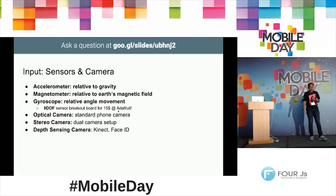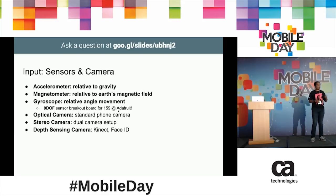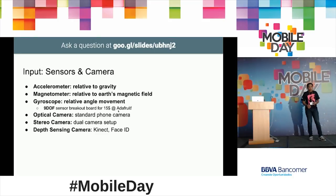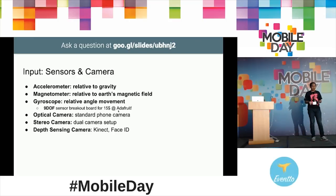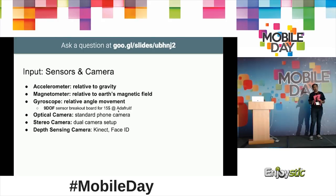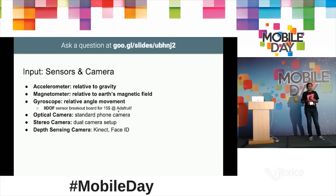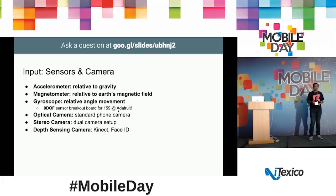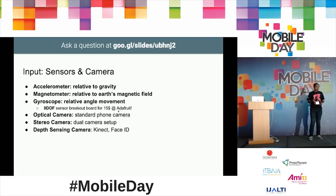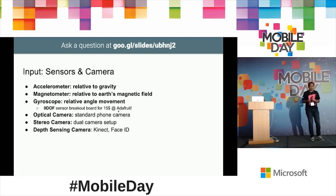For input sensors and cameras, our phones actually support a lot of these right now. Every mobile phone has an accelerometer, a gyroscope — almost all the sensors we need for any virtual reality or augmented reality application. A nine-degree-of-freedom sensor costs about $15 on Arduino, so you can assume bulk-produced nine-degree-of-freedom sensors in your mobile phone cost probably much less.